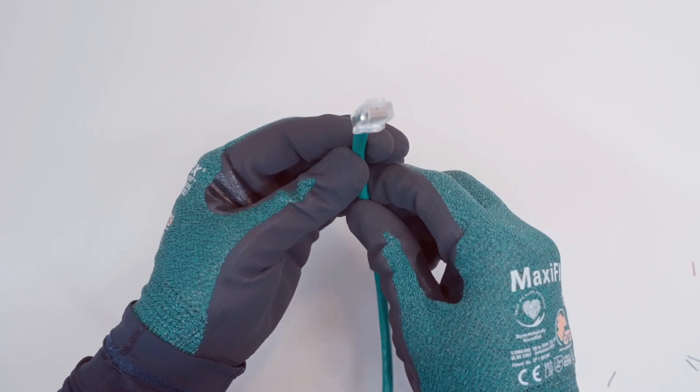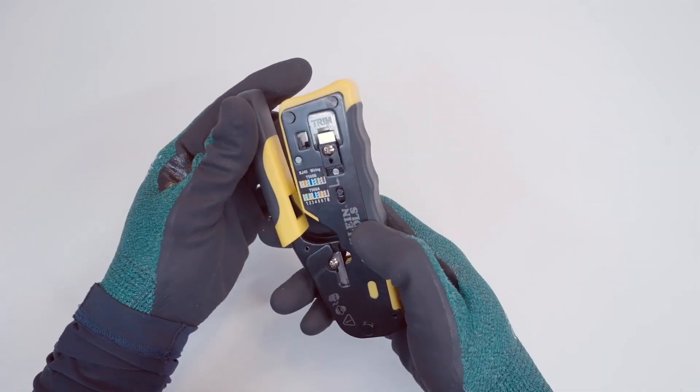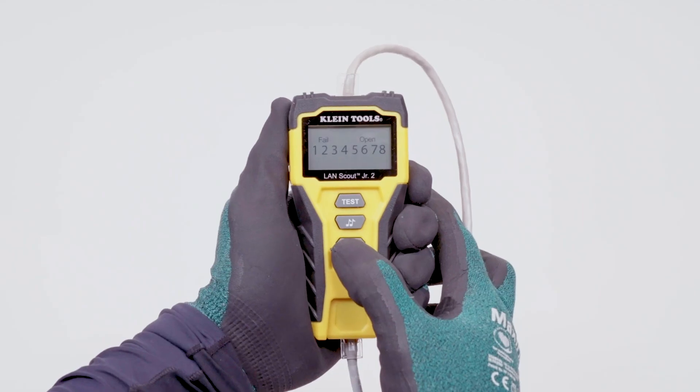To make this Ethernet cable, installers will need CAT5 or higher cable, a crimper, RJ45 plugs, and an Ethernet tester.